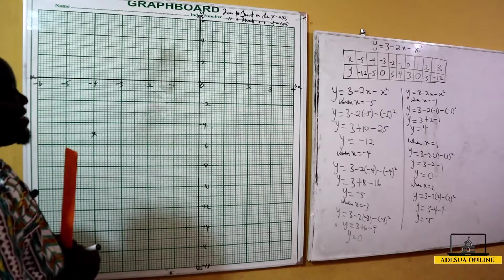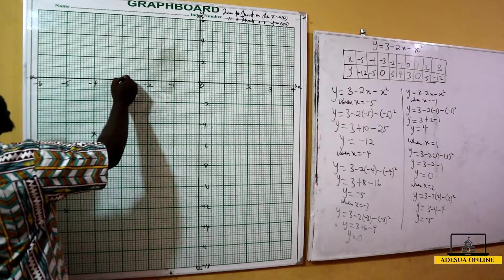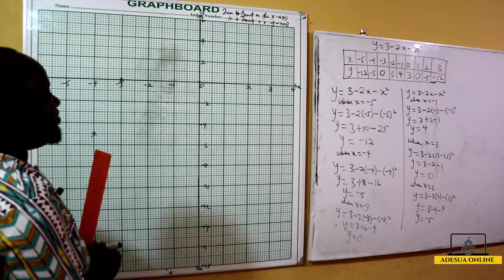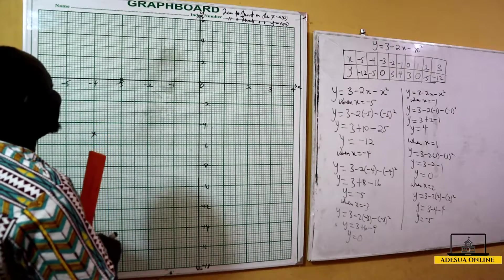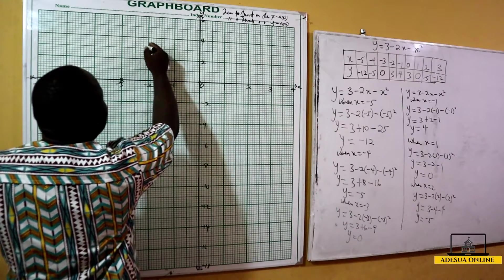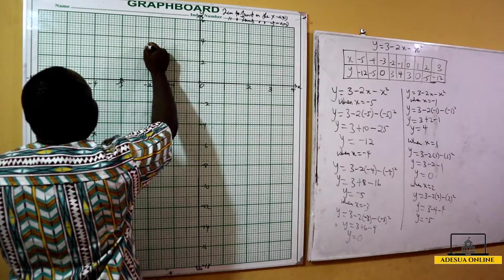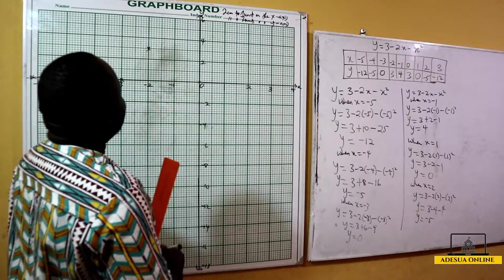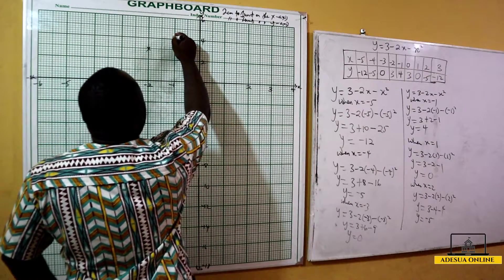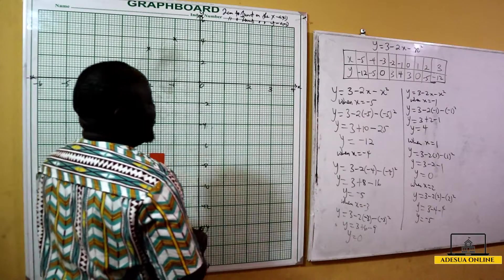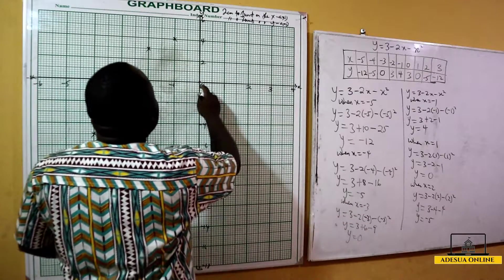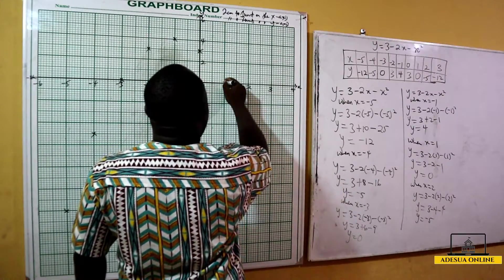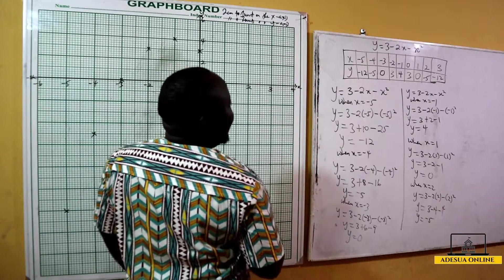When x is negative 3, y is 0 — mark negative 3 on the x-axis where y is zero. When x is negative 2, y is 3 — negative 2 is between 2 and 4 on the y-axis, so mark negative 2, 3. When x is negative 1, y is 4 — mark negative 1, 4.